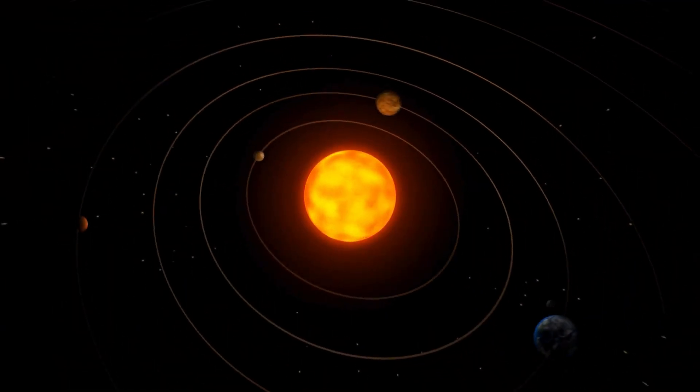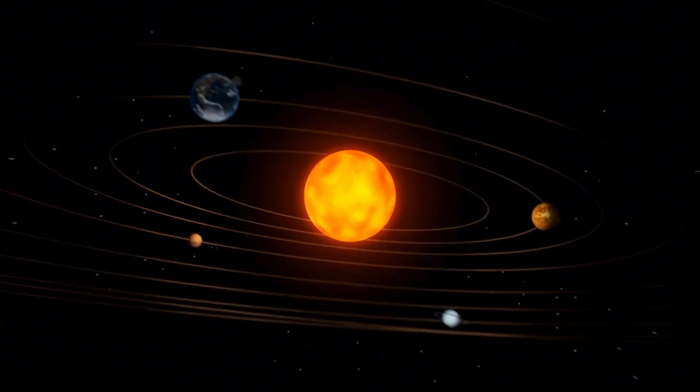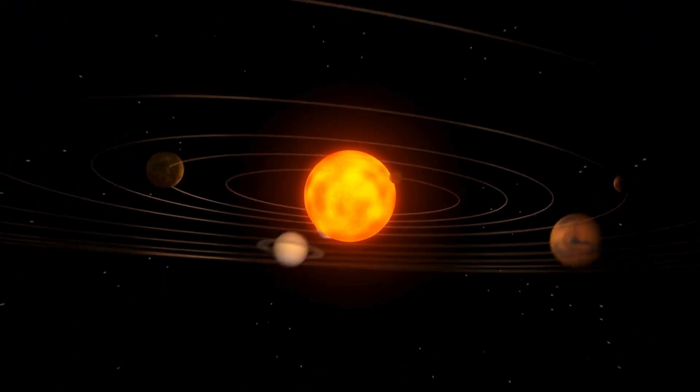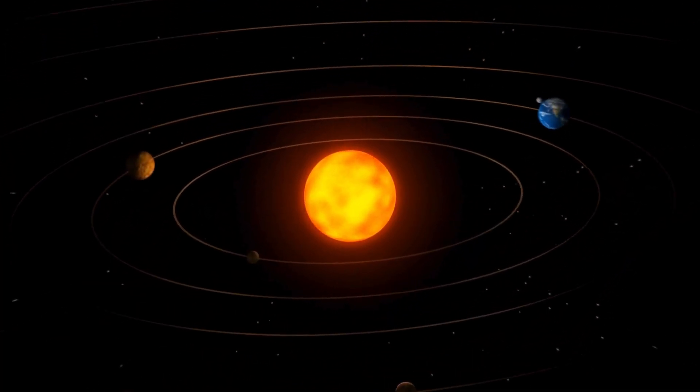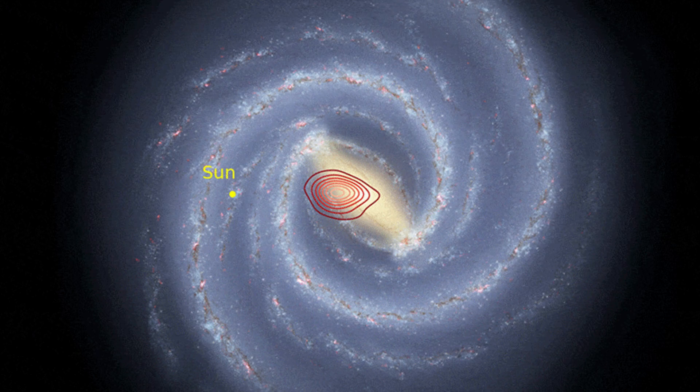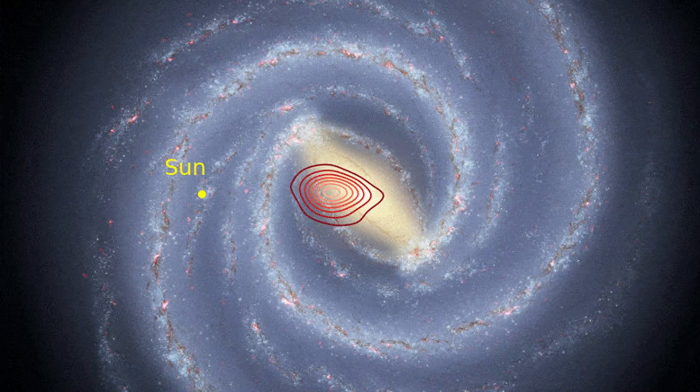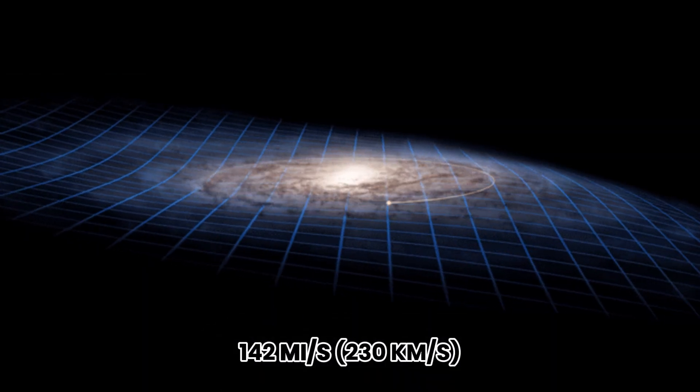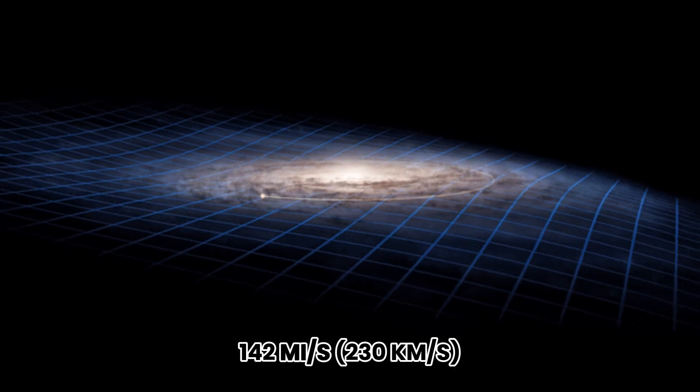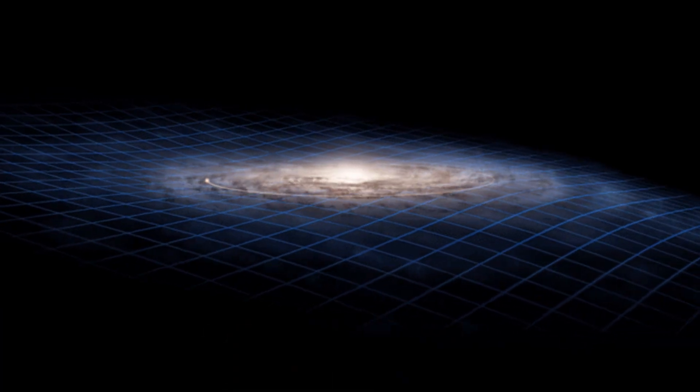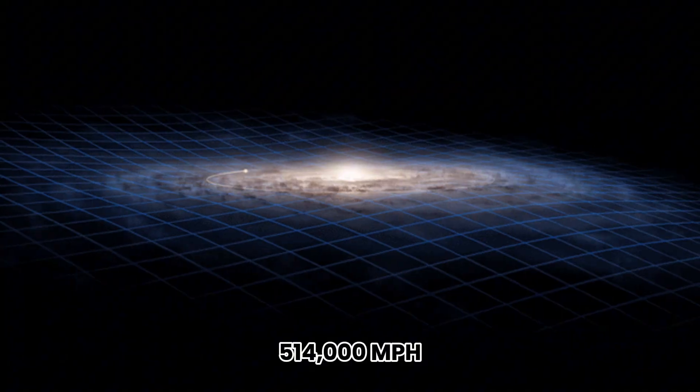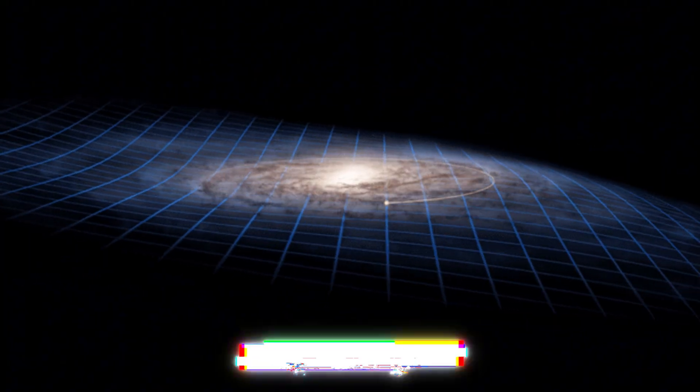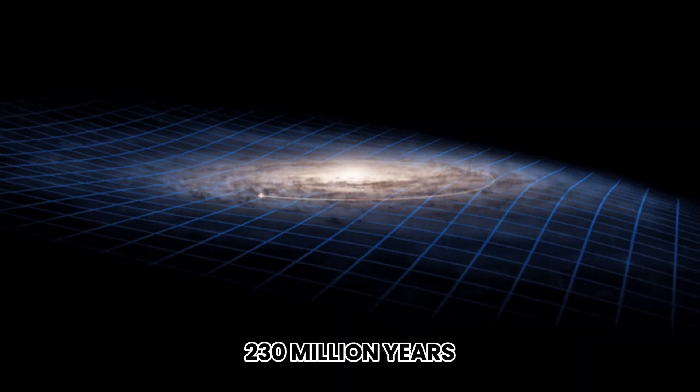Measuring the Sun's motion isn't trivial. Astronomers often track young stars near their birthplaces to triangulate our own speed and direction. The result? The Sun orbits the galactic center at about 142 miles per second, 230 kilometers per second, over 514,000 miles per hour, taking roughly 230 million years to complete one circuit.